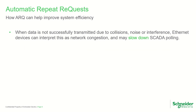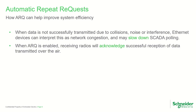In a system using radios with older technology, when messages are lost due to noise or interference, the originating device or software must manage timeouts and retries. When data is not successfully transmitted due to collisions, noise, or interference, Ethernet devices can interpret this as network congestion and may slow down SCADA polling for some time.